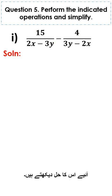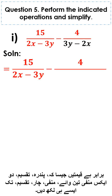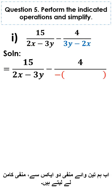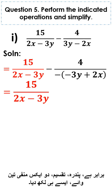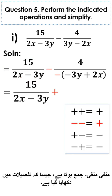The solution is equal to 15 divided by 2x minus 3y, minus 4 divided by 3y minus 2x. We take minus as common from 3y minus 2x. The sign of plus 3y is changed to minus and the sign of minus 2x is changed to plus, giving 15 divided by 2x minus 3y, and minus minus is plus.